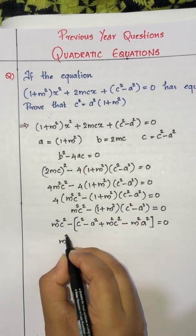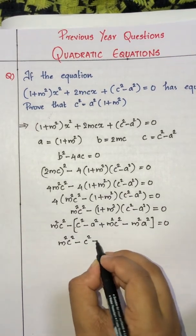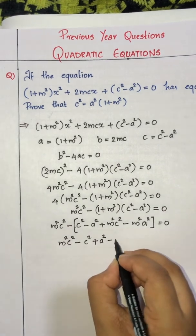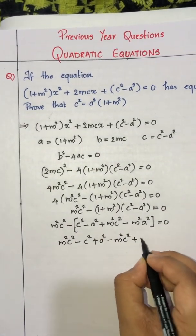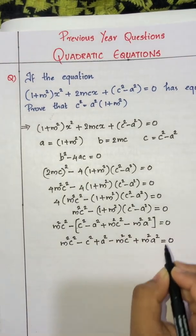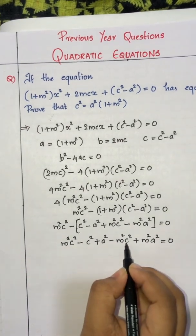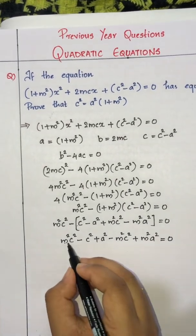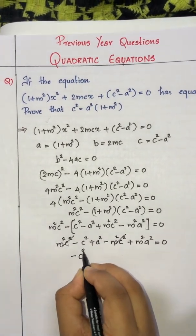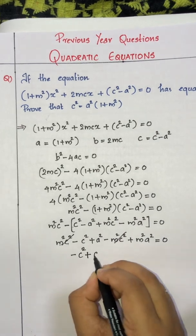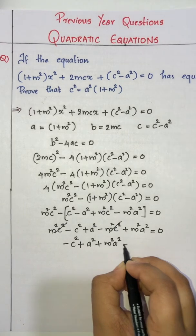After multiplying out and simplifying, the m²c² terms cancel, leaving a² + m²a² = c², which means a²(1 + m²) = c².